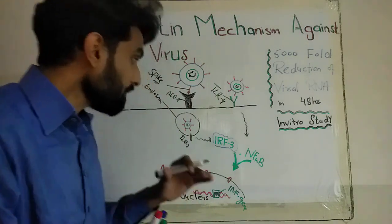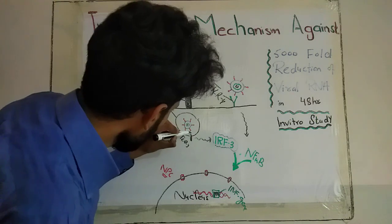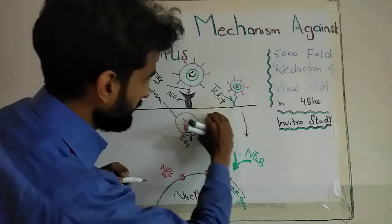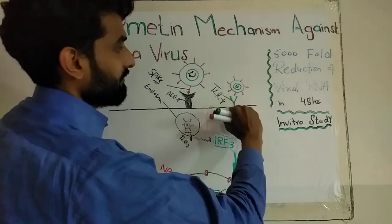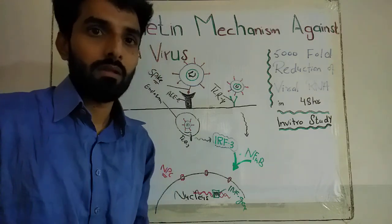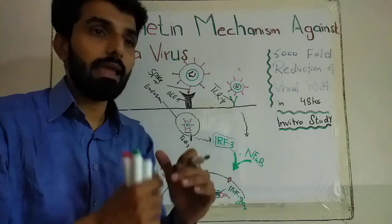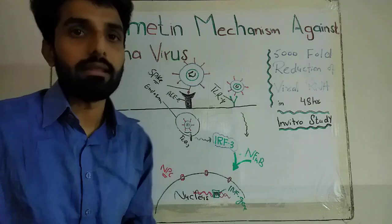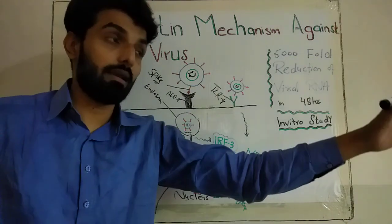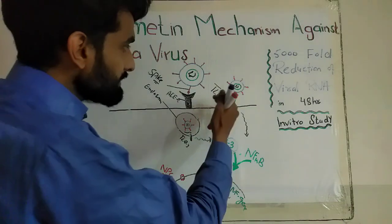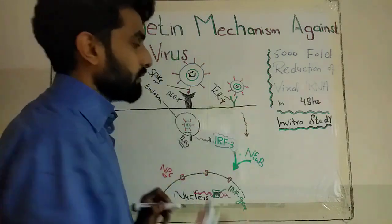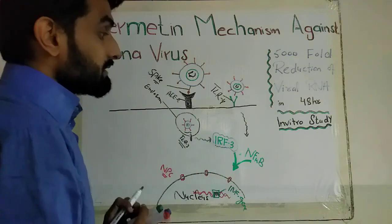The viral RNA will interact with Toll-like receptor 3 (TLR3), which is present on the endosome. Toll-like receptors are also present on the outer surface of the cell to recognize the virus. Toll-like receptors are basically pattern recognition receptors — they recognize a pattern of any foreign particle and are able to differentiate between self-cells and foreign antigens. With the help of patterns on these viruses and bacteria, they can identify whether a particle is foreign or self-antigen.